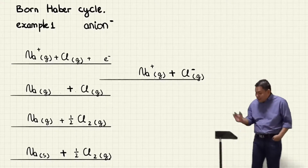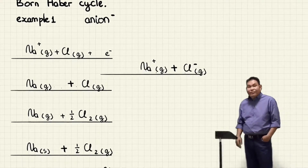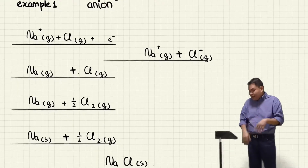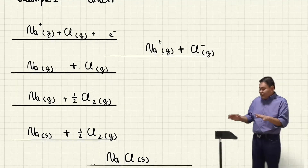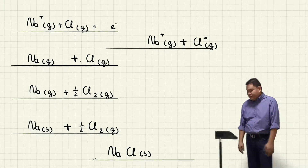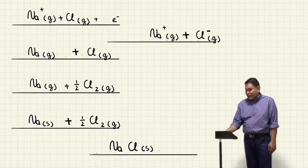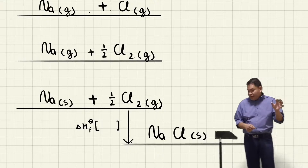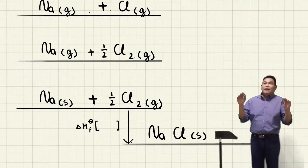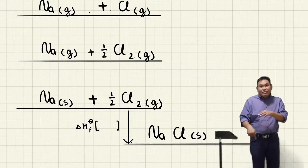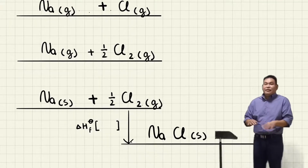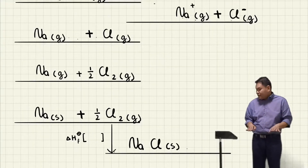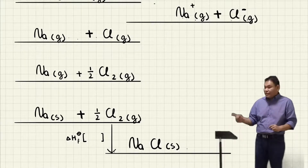That's the pattern if the anion is negative one. We use Example 1, putting all the substances from the previous part of this video. We have sodium solid plus half Cl2 gas as elements in standard state, pointing downwards delta Hf, and below is D which is sodium chloride solid — the ionic compound in solid state.